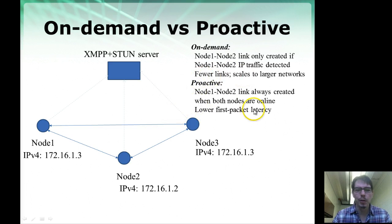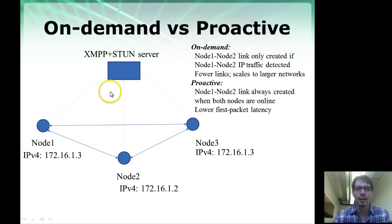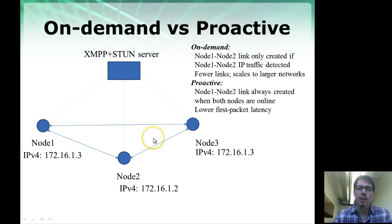The benefit of this proactive approach is that by the time node 1 needs to communicate with node 2 or node 3, a link is already there, so the latency to send the first packet will be short. The problem with proactive is that as the network scales, nodes will create a large number of links — N squared links total in the network — so every node creates N links to every other node. It's not always the case that nodes will communicate with every other node in the network at the IP layer.